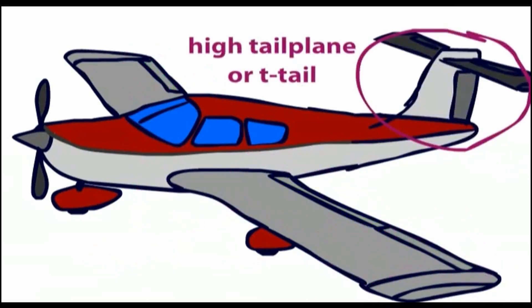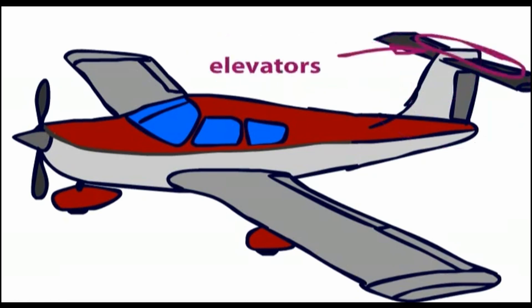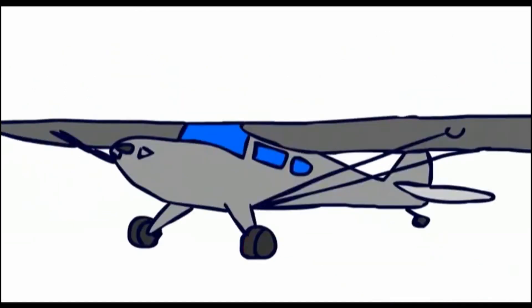High tailplane aircraft look like this, so you should be able to guess why they are also known as T-tail aircraft. Again it still has a vertical stabilizer, elevators, rudders and the like, it is just the positioning of the horizontal stabilizer that is different. This is an example of a tail-dragger aircraft. As you can see it rests on its tail as opposed to its nose.